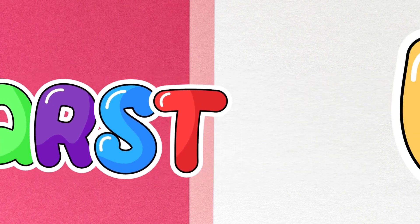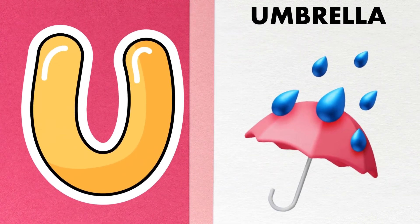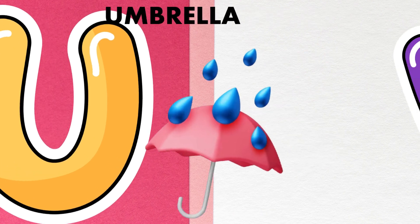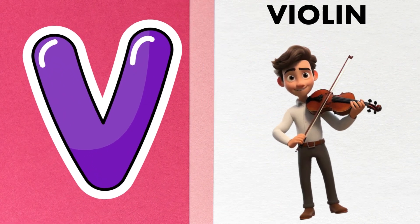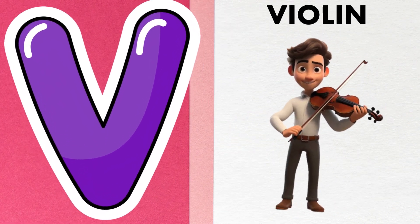U is for umbrella, u-u-u-umbrella. V is for violin, v-v-violin.